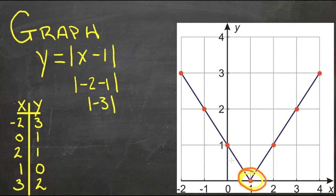When x was 0, y was 1. And when x was 2, y was also 1. So these absolute value equations, when they graph, form this characteristic V-shape with one point that represents the vertex or the turnaround point, and then straight lines on either side.